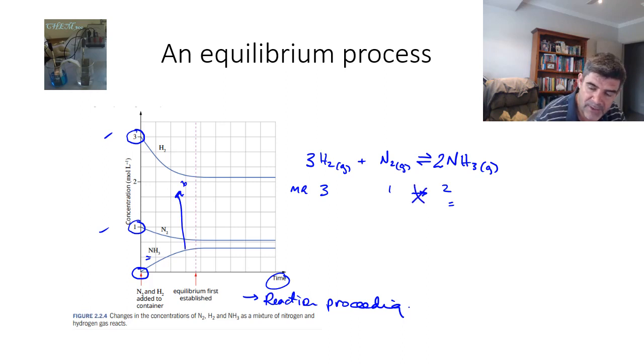That's telling us that this is an equilibrium, not a completion. Because at some point, initially, we have a high ratio of reactants. Therefore, we have a high rate of collision.